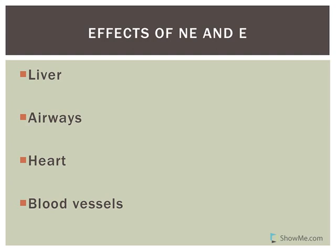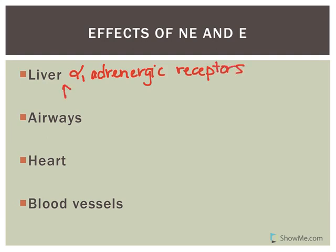In the liver, when you're in fight-or-flight mode you're going to need energy, and a great source of energy is glucose. The norepinephrine and epinephrine bind to alpha-1 adrenergic receptors, and the result is you increase the breakdown of glycogen — glycogenolysis — so you have glucose available for energy.